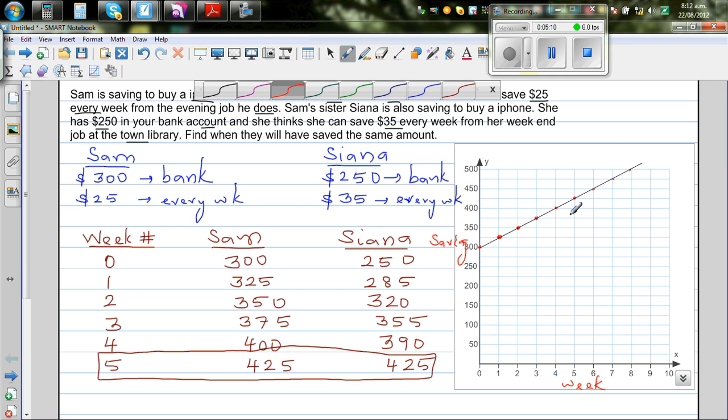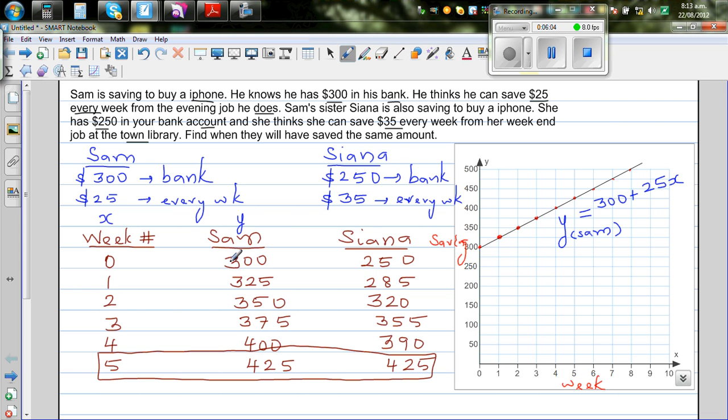If you want to write the equation of this line, let me write Y Sam. If x is the week number and y is the savings, can you think of writing an equation between this and this? This is 300 plus, it's increasing by $25, so it will be 300 plus 25x. When x is 0, y is 300. When x is 1, y is 325. And so on. So this is the graph of Sam.